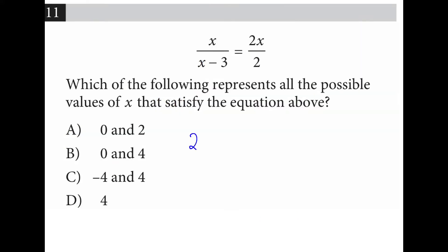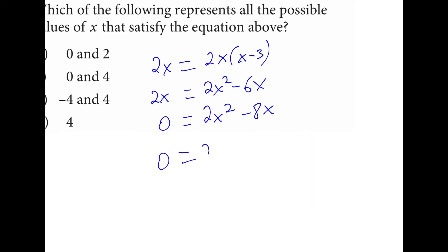Here I can cross multiply, so I have 2x on the left, and I have 2x times x minus 3 on the right. When I distribute the 2x, I have 2x squared minus 6x. When I solve this for 0, I have 2x squared minus 8x. I can then factor out a 2, which gives me x squared minus 4x.